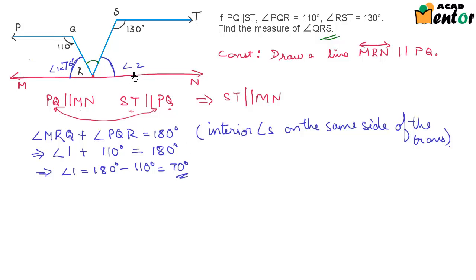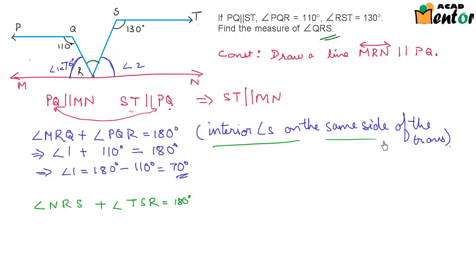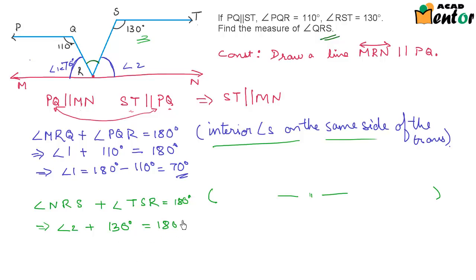Similarly, we find angle 2. Angle NRS plus angle TSR equals 180 degrees, for the same reason — they are interior angles on the same side of the transversal, hence supplementary. So angle 2 plus 130 degrees equals 180 degrees, giving angle 2 equal to 50 degrees.